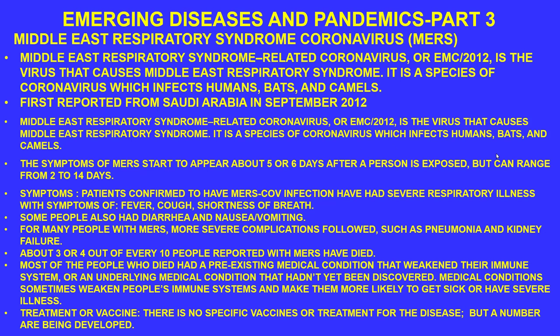Now we move to another type of coronavirus: Middle East Respiratory Syndrome — MERS. The MERS-related coronavirus, also called EMC 2012, was first reported in Saudi Arabia in December 2012. It is a species of coronavirus that infects humans, bats, and camels. Symptoms start to appear about five to six days after exposure, though the range can be two to 14 days. Confirmed MERS-CoV infections have had severe respiratory illness with fever, cough, and shortness of breath.